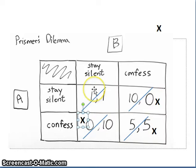The other option is that if prisoner B confesses, then prisoner A has the choice to stay silent or to confess. If they stay silent, then they'll get 10 years. If they confess, then they'll get five years. This is where it would be the better option for them to confess.